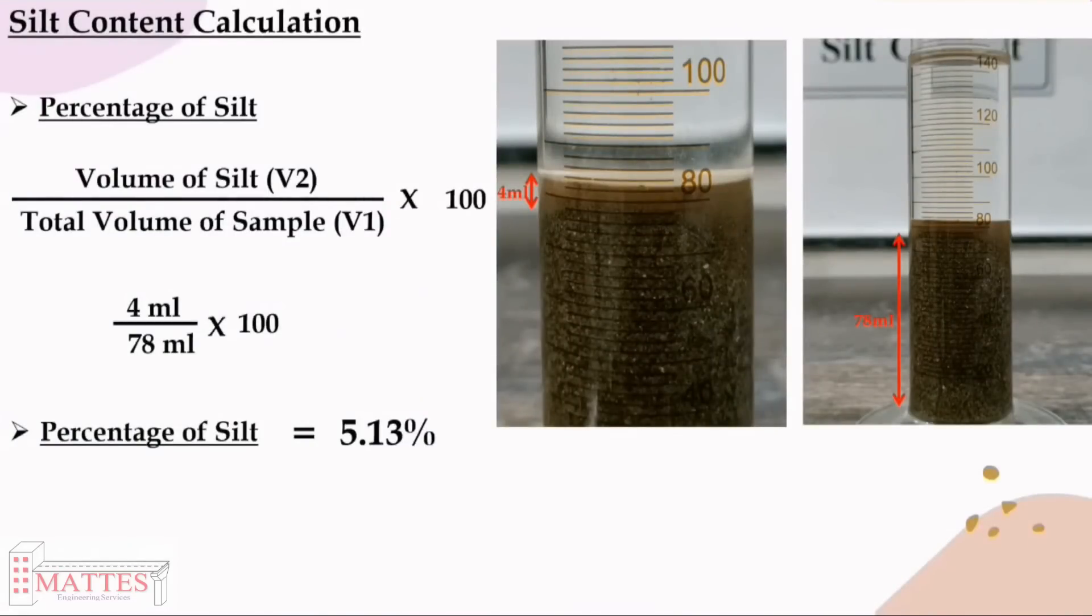Calculate the percentage of silt. In this case, total volume of the sample is 78 ml and the volume of silt is 4 ml. Percentage of silt can be calculated as 5.13%.